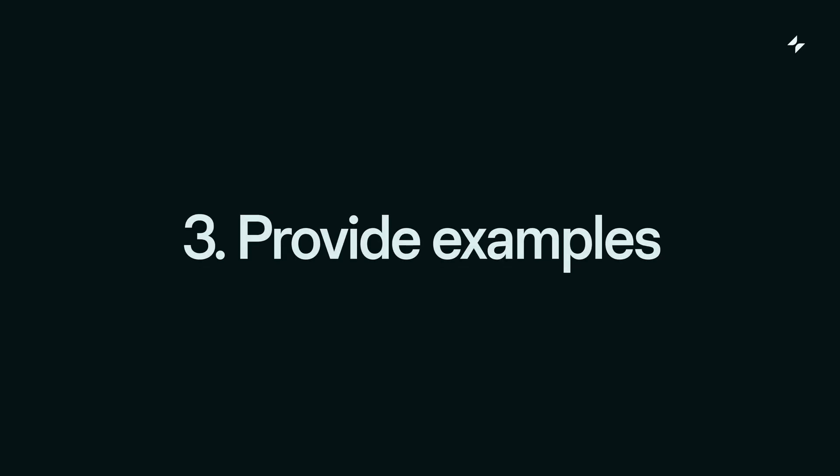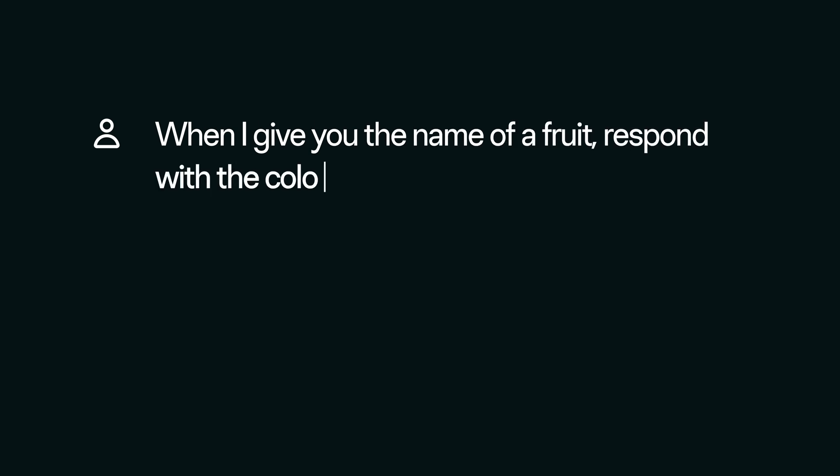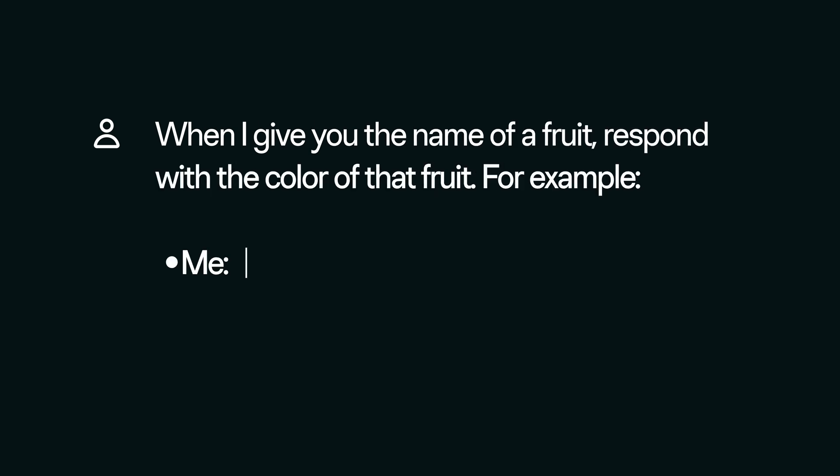Number three is to provide examples. Examples really prime the language model for the kind of tasks you're going to give it in the future. You tell it what kind of input you're going to give it and what kind of output you expect back. For instance, a very simple example: 'When I give you the name of a fruit, respond with the color of that fruit. For example, if I say banana, you say yellow.'